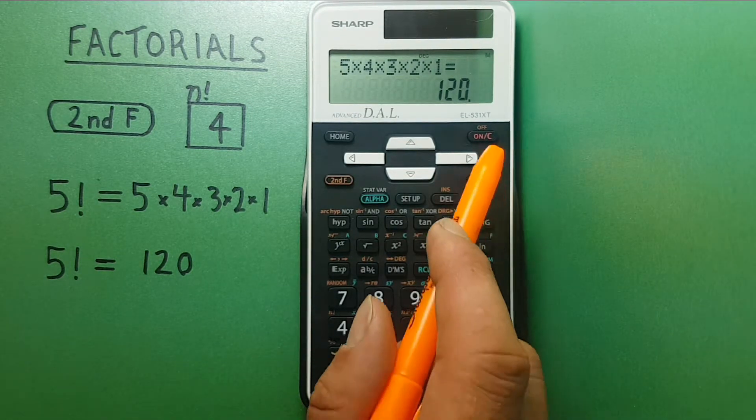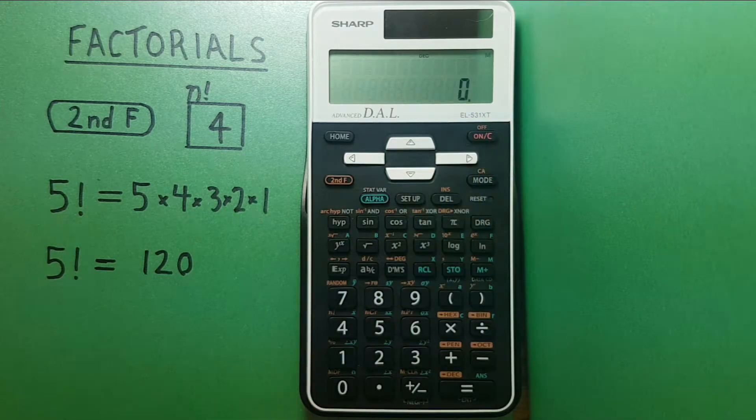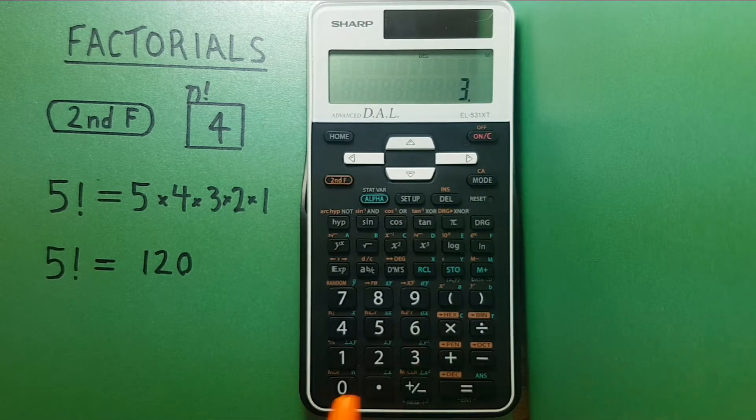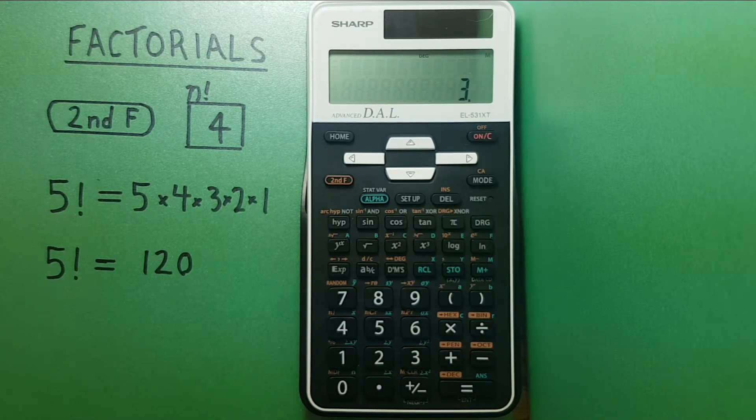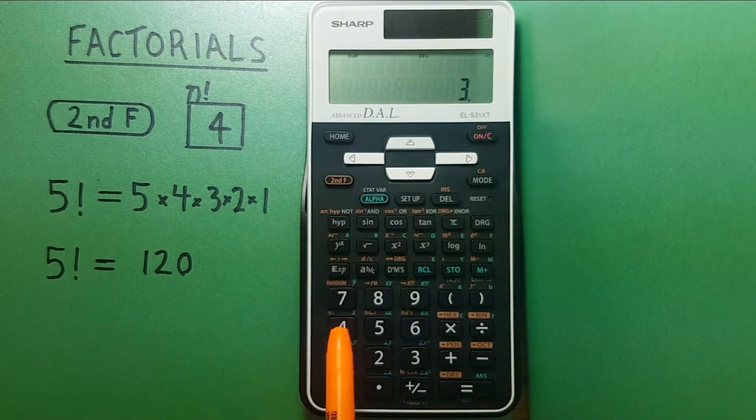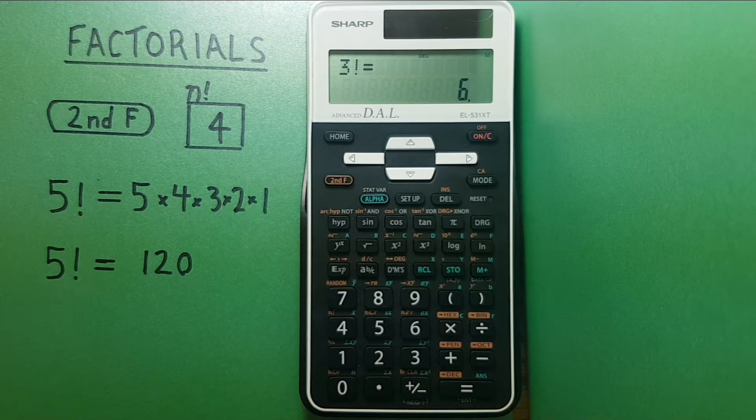Let's try a couple more. How about 3 factorial which we know should be 3 times 2 times 1. So 6. And we get 6 which is correct.